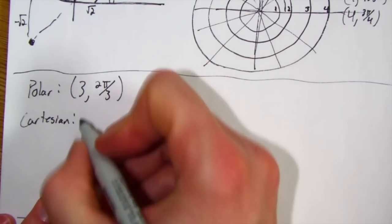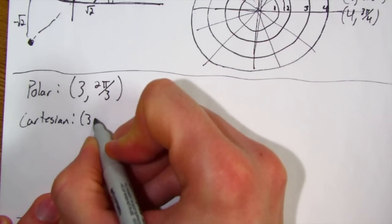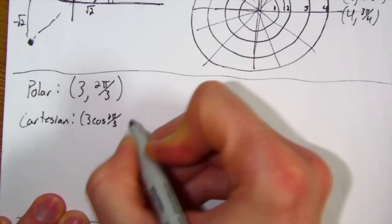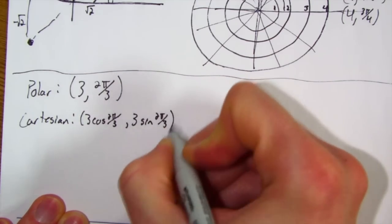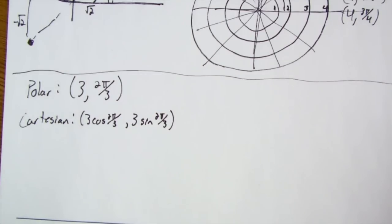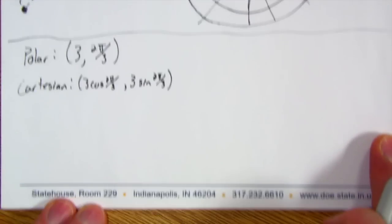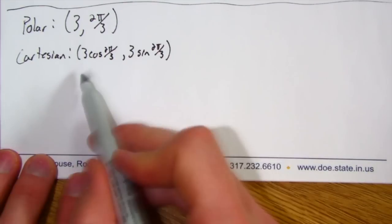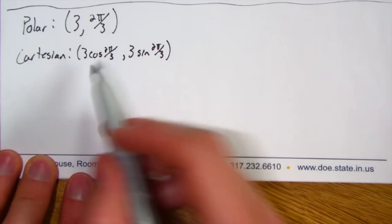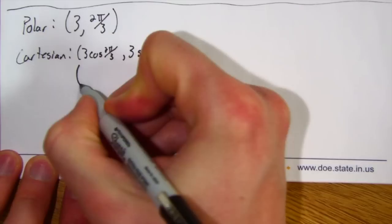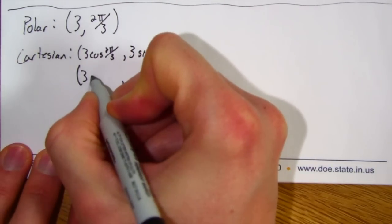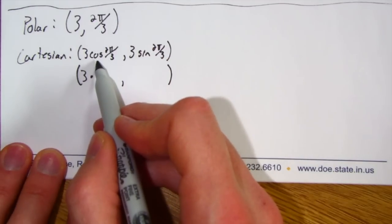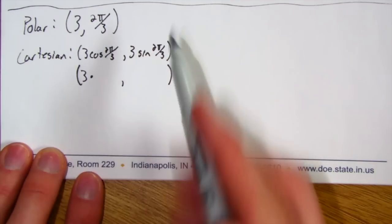So I'm going to do essentially 3 cosine 2π over 3, and then 3 sine 2π over 3. Now we want to try to be as exact or have as exact answers as possible. And so hopefully you notice that 2π over 3 is an angle that we have in our unit circle. So I would expect that you use an exact value here. So this would be 3 times... 2π over 3, just as a reminder, is 120 degrees.